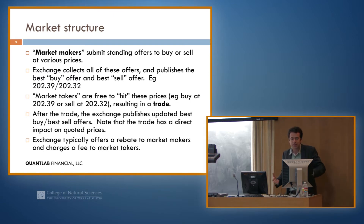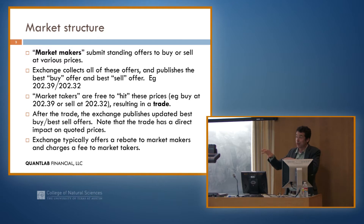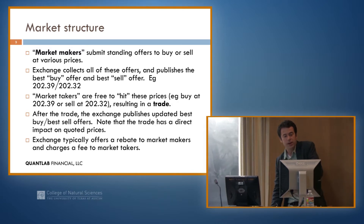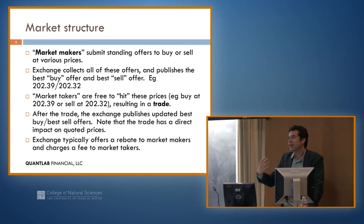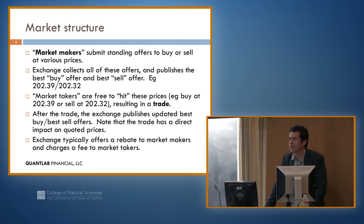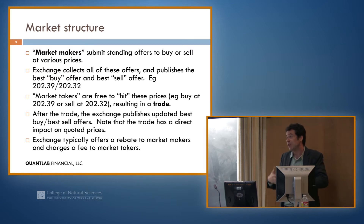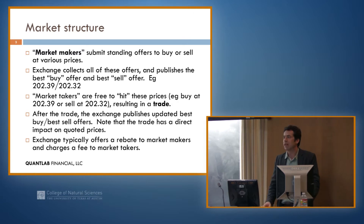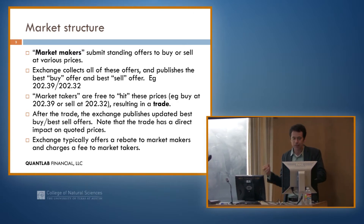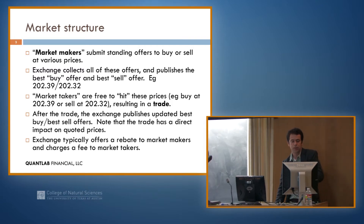When they do that, you actually have a transaction — the thing changes hands and you have what's called a trade. After the trade happens, the exchange needs to update — there's one fewer offer in the market, so the exchange records the fact that a trade happened and updates the new best bid and best offer. Anytime you make a trade, if you want to buy 100 shares of IBM, that immediately changes the price potentially, because all of a sudden there's less available liquidity. Typically the exchange subsidizes market makers and offers them money back for every trade, while anybody who actually hits one of those orders pays a fee that goes to the market makers.